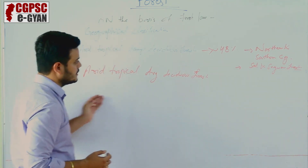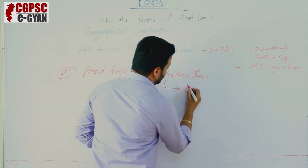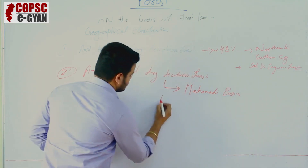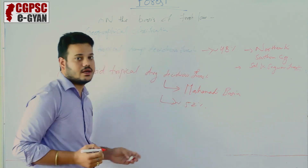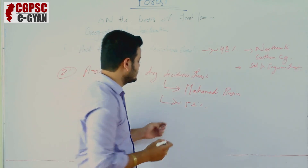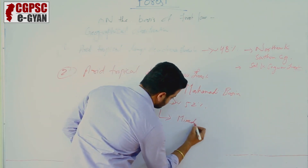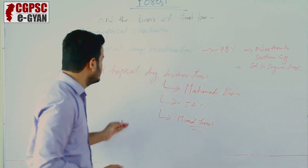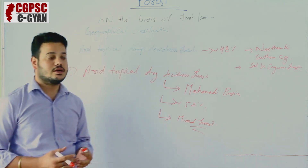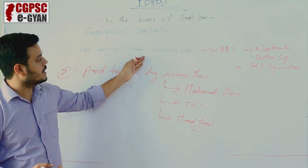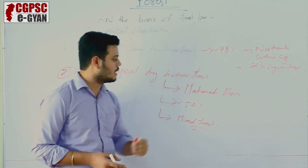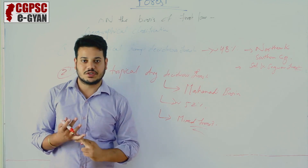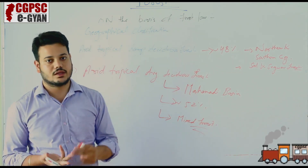Second is the Arid Tropical Dry Deciduous Forest, which covers about 52% of the total forest area and mainly covers the Mahanadi Basin area, including mixed forests. So, according to geography, Chhattisgarh's forests are divided into two parts: Arid Tropical Moist Deciduous and Arid Tropical Dry Deciduous. This completes the three bases of classification: vegetation, forest law, and geography.